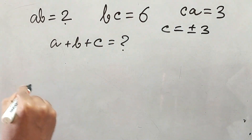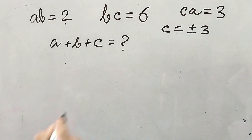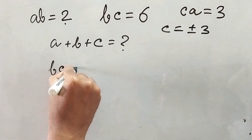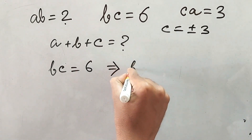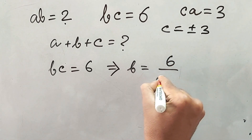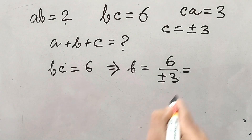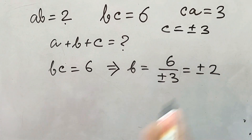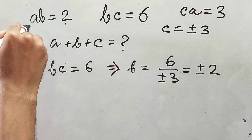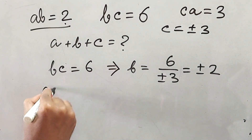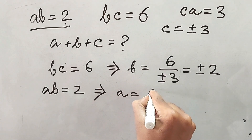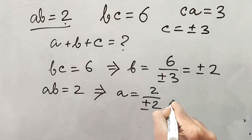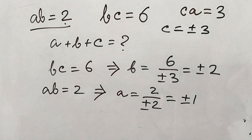Now, BC is equal to 6. We know the value of C. If we put the value of C here, we get B is equal to 6 divided by plus or minus 3, which implies B is equal to plus or minus 2. In the same way, if we put the value of B into AB equals 2, we get A is equal to 2 divided by plus or minus 2, which is equal to plus or minus 1.